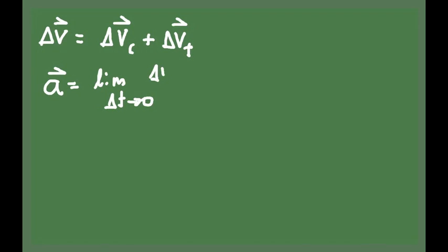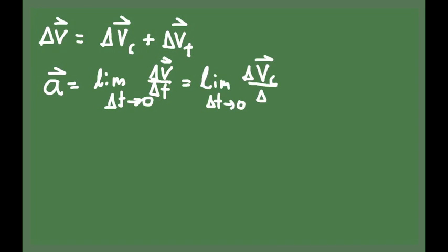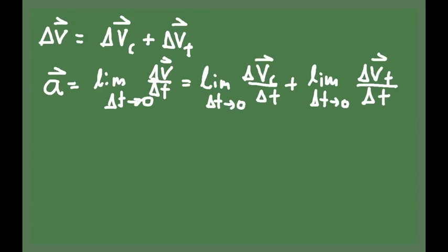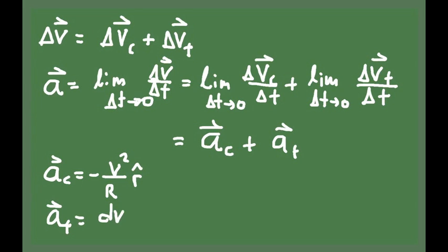The acceleration is calculated by taking the vector delta v, dividing it by delta t, and applying the limit as delta t goes to zero. We can apply this limit to both components. The first gives us the centripetal acceleration — the component pointing toward the center of the circle — which is our familiar centripetal acceleration. The second term is the tangential acceleration, related to the change in speed of the object. The expression for centripetal acceleration is minus v squared over r in the direction r-hat, and the expression for tangential acceleration is simply dv/dt, where v is the speed (the magnitude of the velocity vector), so dv/dt is the rate of change of speed.